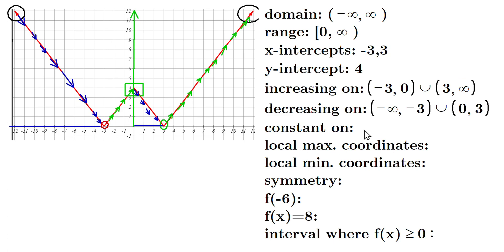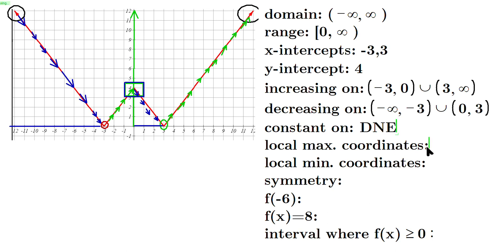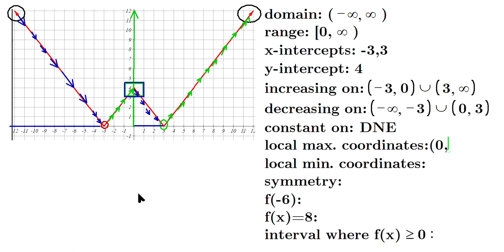Where is it constant? You can just say DNA — doesn't exist. It's not constant anywhere. Local max coordinates: there's one local max. Within that little region, the highest Y coordinate is positive four, and every other Y coordinate is lower than positive four. So the local max coordinates are X equals zero, and when you look down to the X axis that's zero, and Y equals positive four.